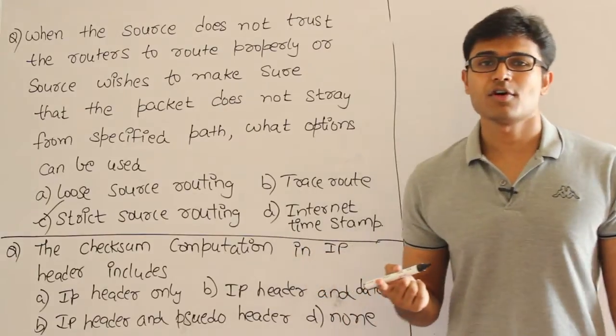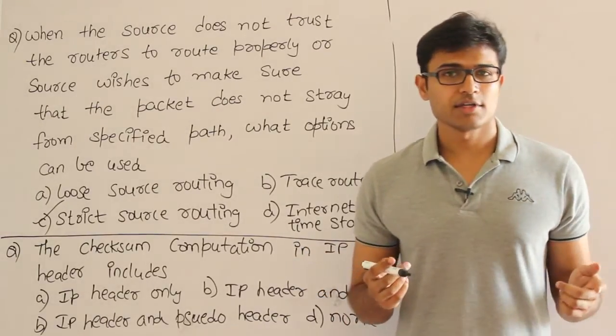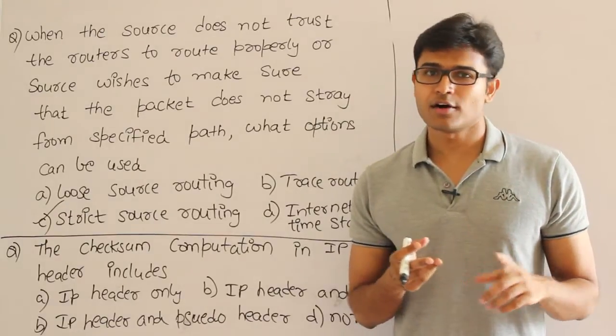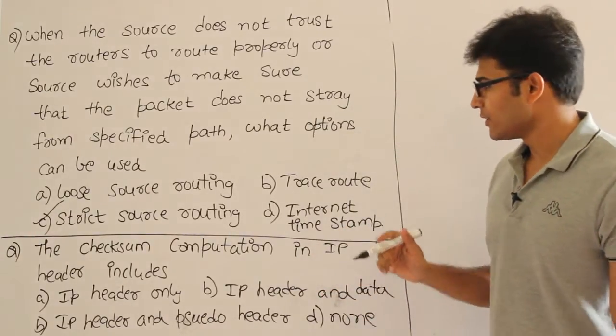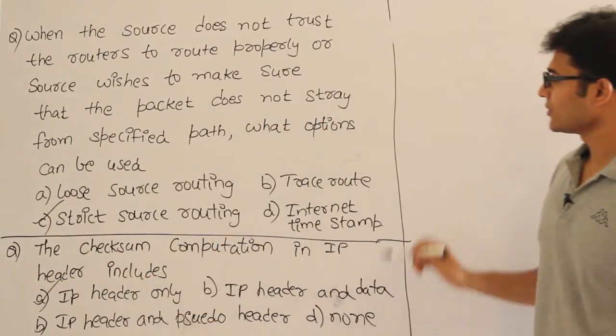Then next one is checksum computation in the IP header includes. In IP the checksum is also called as header checksum, which means it includes only the header. It does not include either the data or pseudo header or nothing. It only includes the header. Therefore checksum computation in IP includes only header.